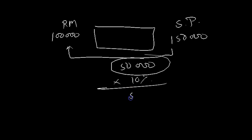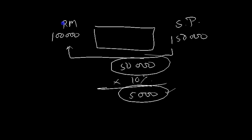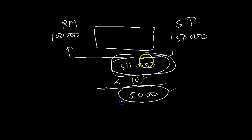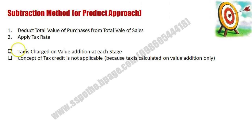Apply 10% on the 50,000 difference and the tax comes to 5,000 rupees. In the subtraction method, you subtract the purchase price of raw material from the sale price of the final product — that is the value addition — and apply the tax rate. Tax is charged on the value addition at each stage. The concept of tax credit is not applicable here, because we are directly calculating tax on value addition only, not on the actual sale price.